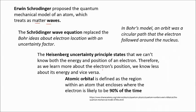An atomic orbital is defined as the region within an atom that encloses where the electron is likely to be 90% of the time.